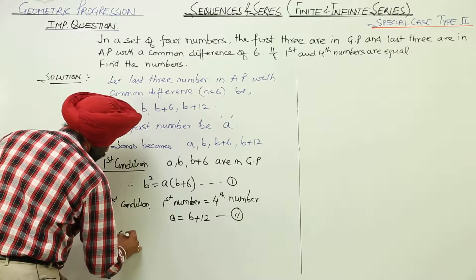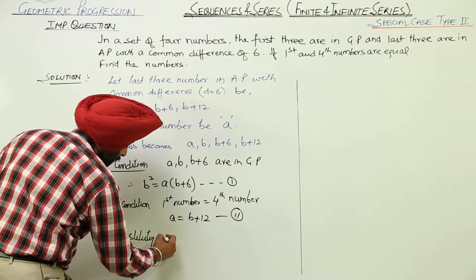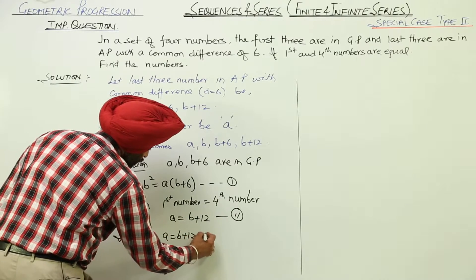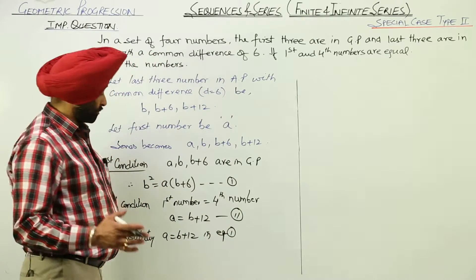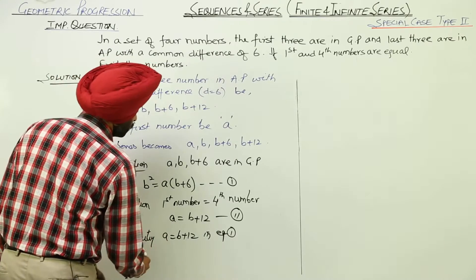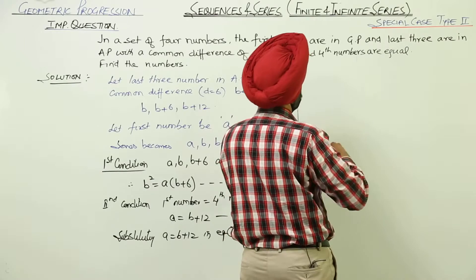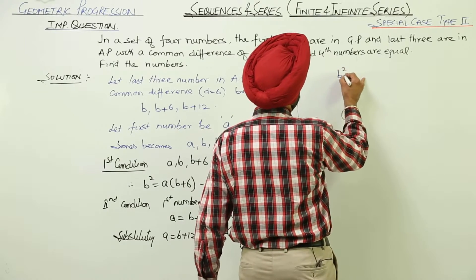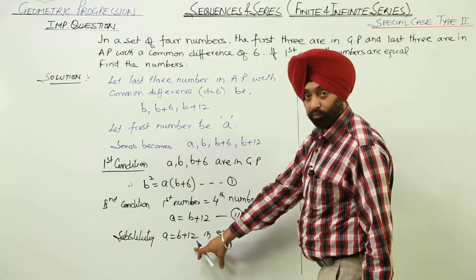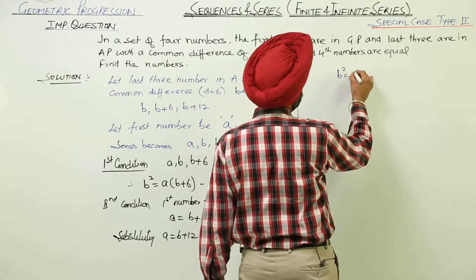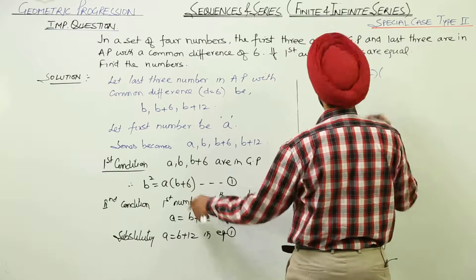Substituting A is equal to B plus 12 in equation 1, or you can write it solving 1 and 2. So, B square is equal to... in place of A here, we are putting B plus 12. B square is equal to B plus 12 with B plus 6.